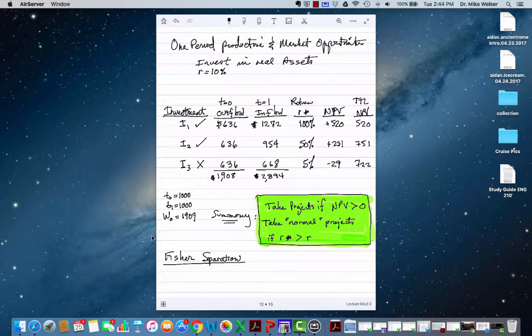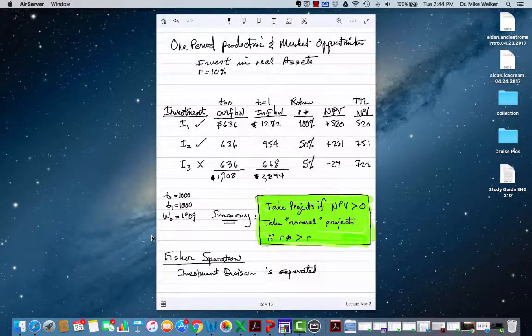The financial manager is basically taking on the wealth-increasing projects. The investment decision is actually separate from the investor's consumption decision. Once you've maximized their wealth, the shareholders can do whatever they want to do. This is the separation issue—the investment decision is separated from the investor's consumption decision.